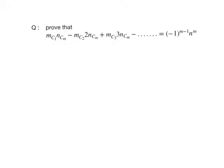The next problem is to prove that mC1 · nCm minus mC2 · 2nCm plus mC3 · 3nCm minus dot dot dot equals minus 1 power m minus 1 into n power m. To solve this equation we will take the left-hand side.